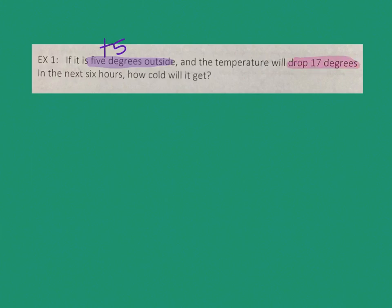It's going to drop 17 degrees. Dropping means it's going to go down, so that's going to be negative 17. The final answer is just wanting to know how cold it is going to be after this time period. So I have one positive number and one negative number: positive 5 and negative 17.